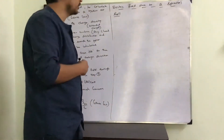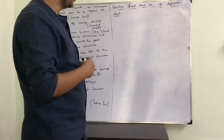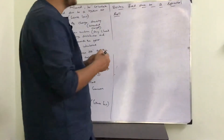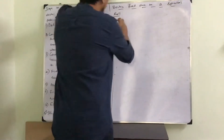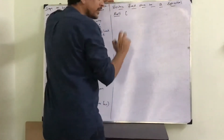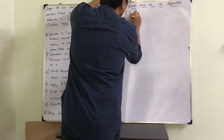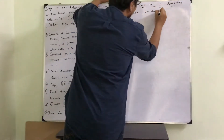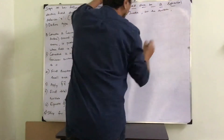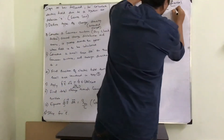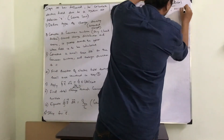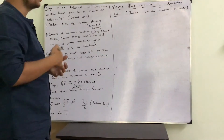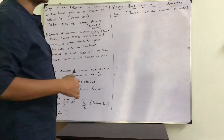The last application of Gauss's Law we are going to see is the electric field due to a spherical shell. Unlike the previous two cases, we will calculate at three points: one is inside the shell, one is on the surface, and the last one is outside the shell. These are the three points where the electric field due to the system is going to get calculated.